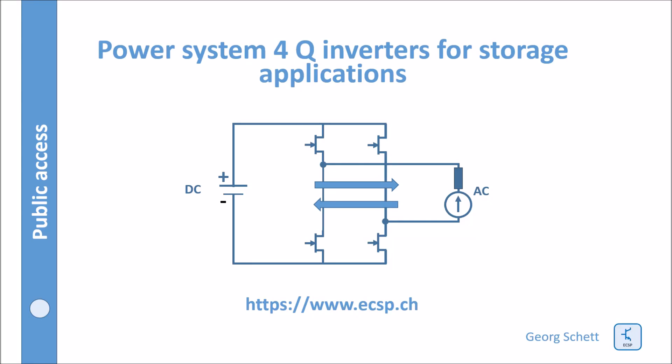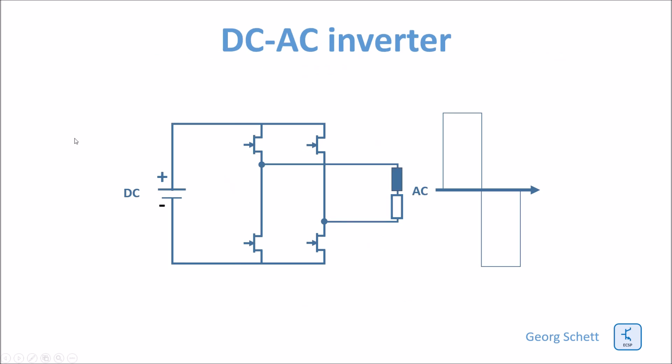Hello. Today we will talk about 4-quadrant inverters for storage applications. A DC-AC inverter transforms a DC voltage into an AC voltage.